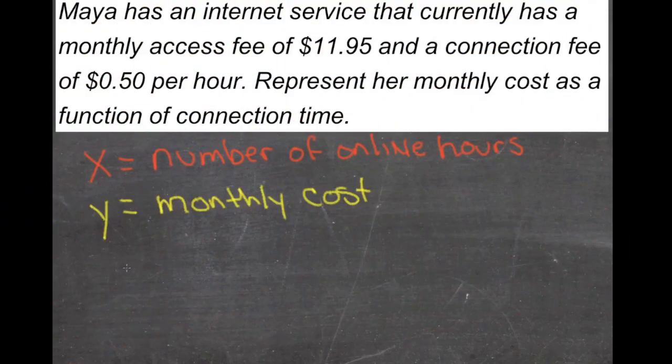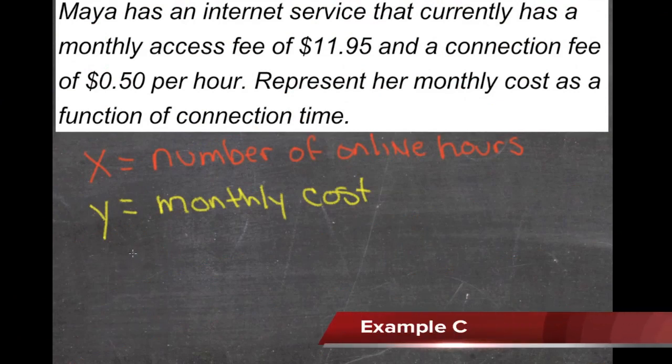Here we have a word problem that we need to convert to a function. Maya has an internet service that currently has a monthly access fee of $11.95 and a connection fee of $0.50 per hour. We need to represent her monthly cost as a function of connect time.